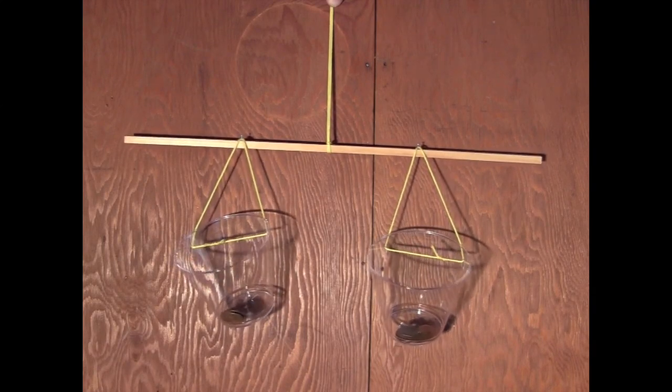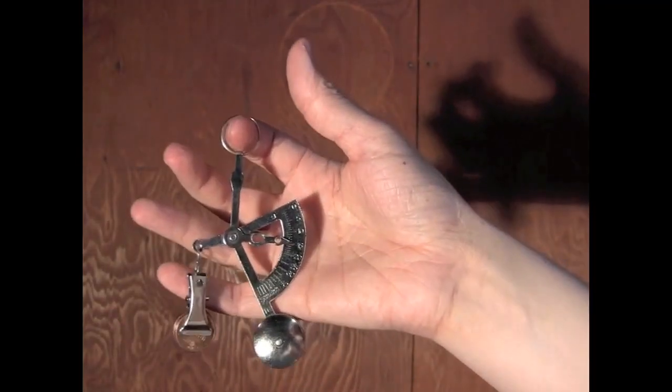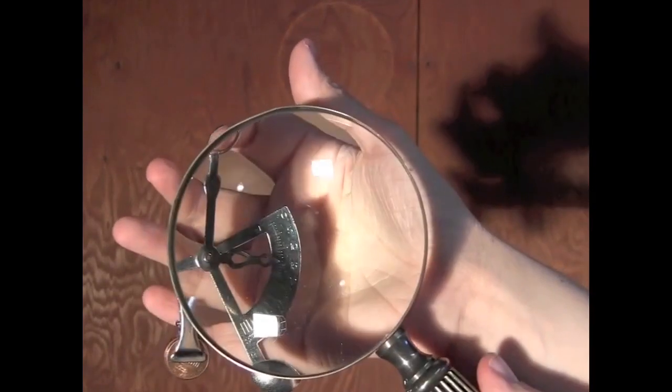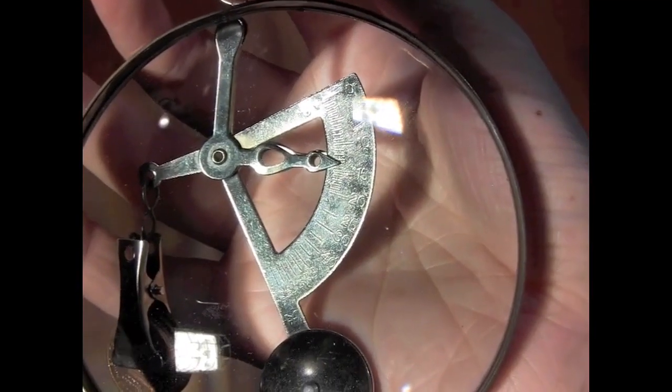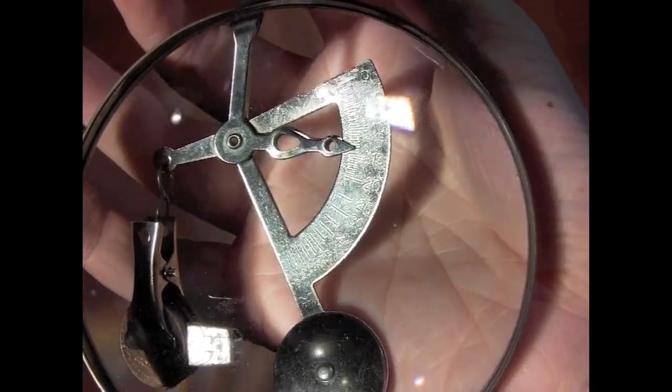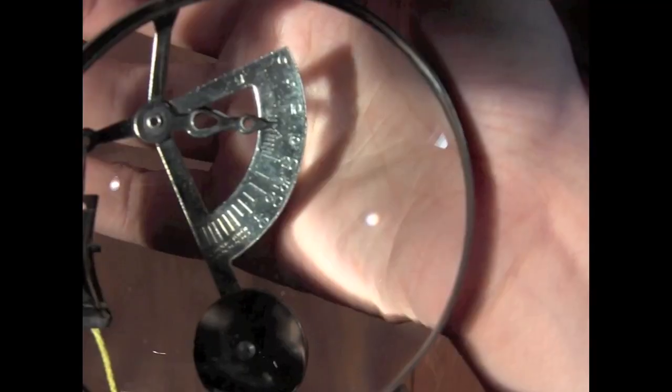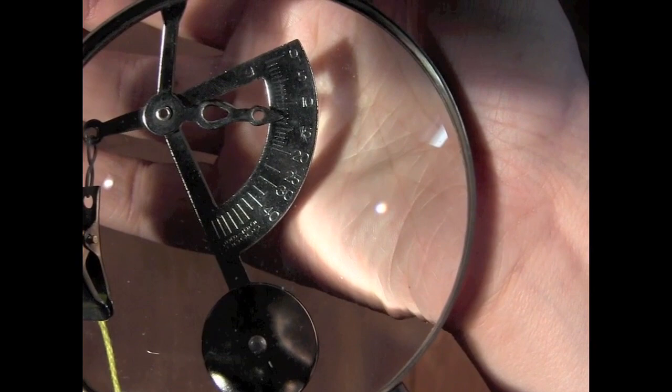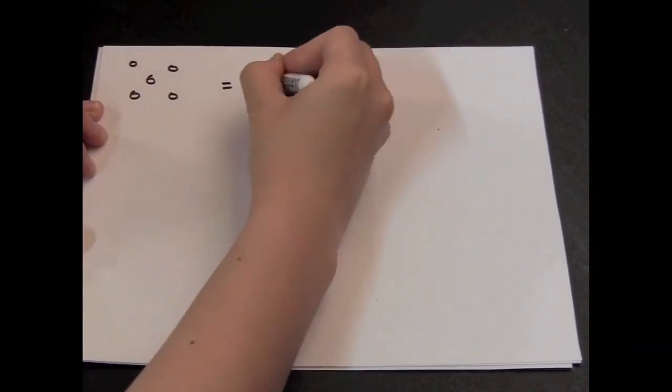Before I calculate some torques, I need to check some of the masses. The mass of five coins is 13 grams, and the mass of the cup plus the string is also 13 grams. And since we're on Earth, this means that they both have the same weight, which I'll call W.